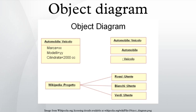Object diagrams are more concrete than class diagrams. They are often used to provide examples or act as test cases for class diagrams. Only aspects of current interest in a model are typically shown on an object diagram.